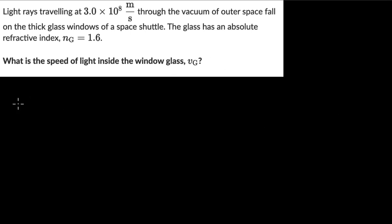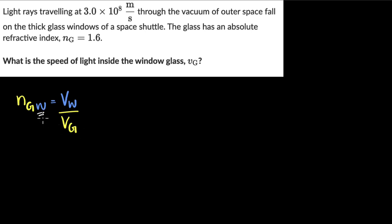Let's start by defining what refractive index is. The refractive index of one medium, say glass, with respect to some other medium, say water, is defined as the velocity of light in water divided by the velocity of light in glass. Important to note: whichever medium you're comparing with respect to, that medium's speed of light comes in the numerator. This is called relative refractive index, because we are measuring the refractive index of one medium relative to another — relative to water.